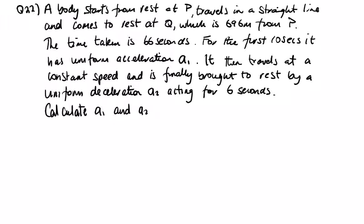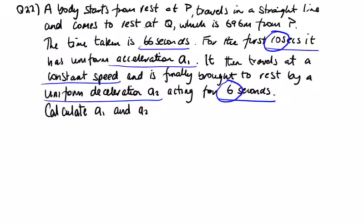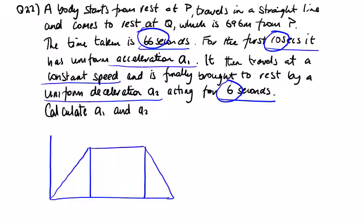Question 22. A body starts from rest at P, travels in a straight line and comes to rest at Q, which is 696 meters from P. The time taken is 66 seconds. For the first 10 seconds, it travels with uniform acceleration A1, then travels at constant speed, and finally brought to rest by uniform deceleration A2 for 6 seconds. So we're given 10, 6, and 16, so there must be 50 left in the middle. So let's draw that. Constant speed, deceleration. We call max velocity V. We don't know what A1 is and we don't know what A2 is, but we do know the times here. First 10 seconds, final 6, and the middle is 50.